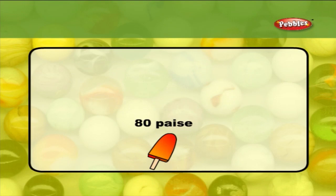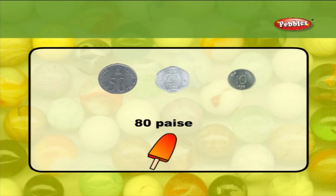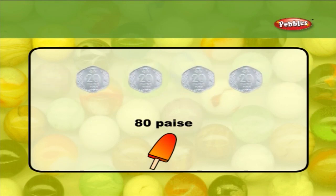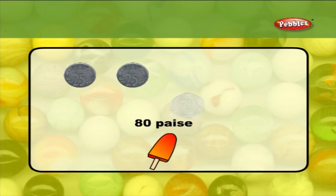In the same way, when you need to buy an ice cream worth 80 paise, we can use one 50 paise coin, one 20 paise coin, and one 10 paise coin, which equals 80 paise; or four 20 paise coins, which is also equal to 80 paise; or two 25 paise coins, one 20 paise coin, and one 10 paise coin.